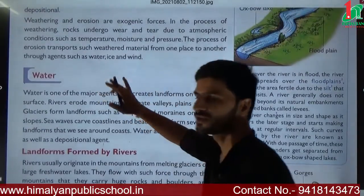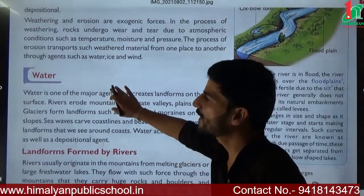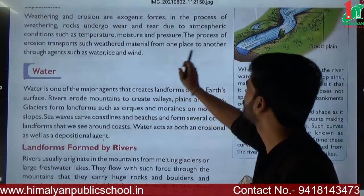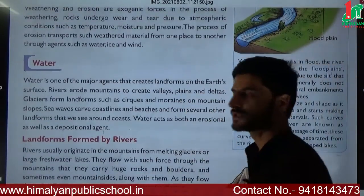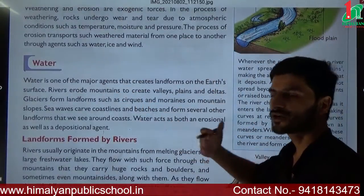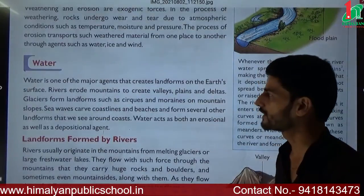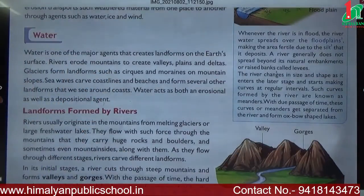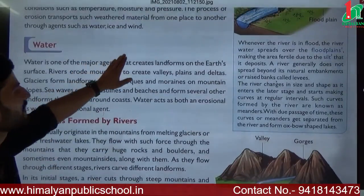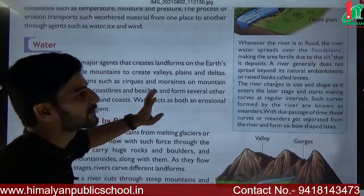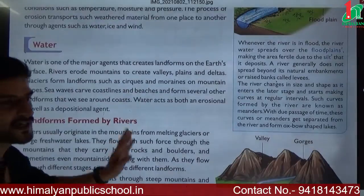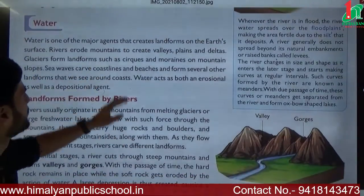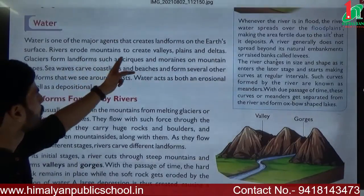The agents of erosion are water, ice and wind. When the weathered materials are migrating from one place to another, they are transported and then deposited in an area, creating new landforms. Water is one of the major agents that creates landforms on the earth's surface. When these materials — sediments — are transported from one place to another, they will be deposited, and which landforms are created depends on the agent.